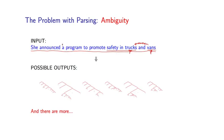Here's another example. So under another interpretation, she could be announcing a program to promote safety where the entire program is located in trucks and vans. That corresponds to an interpretation where this preposition in is modifying the program. So the program is actually located in trucks and vans. Again, a crazy interpretation, but a valid one for this particular sentence.